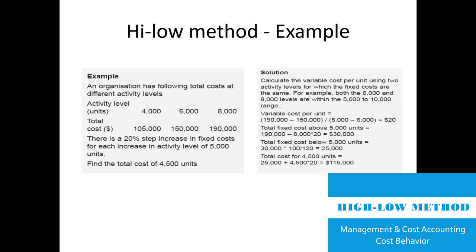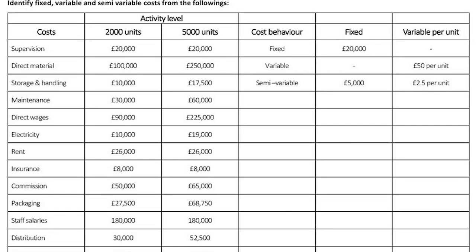The total fixed cost below five thousand units is one hundred percent, not one hundred twenty percent, giving us twenty-five thousand. Now we can find the total cost at any activity level. The total cost to produce four thousand five hundred units is twenty-five thousand plus four thousand five hundred times twenty, which equals one hundred fifteen thousand.